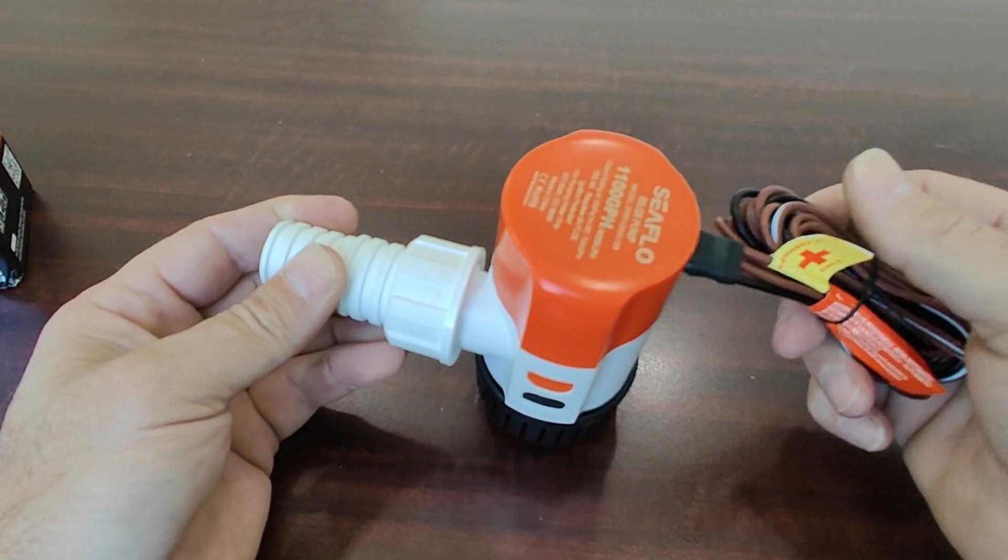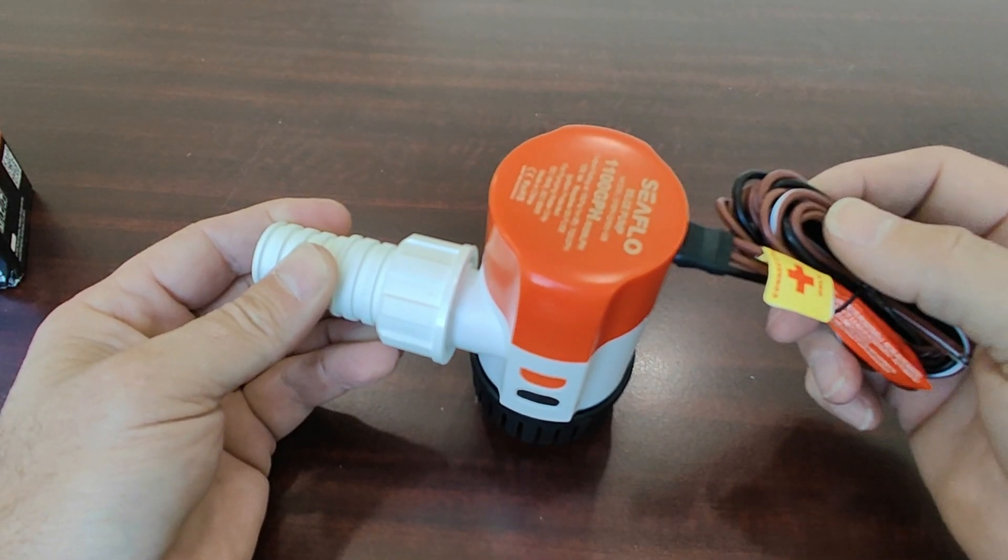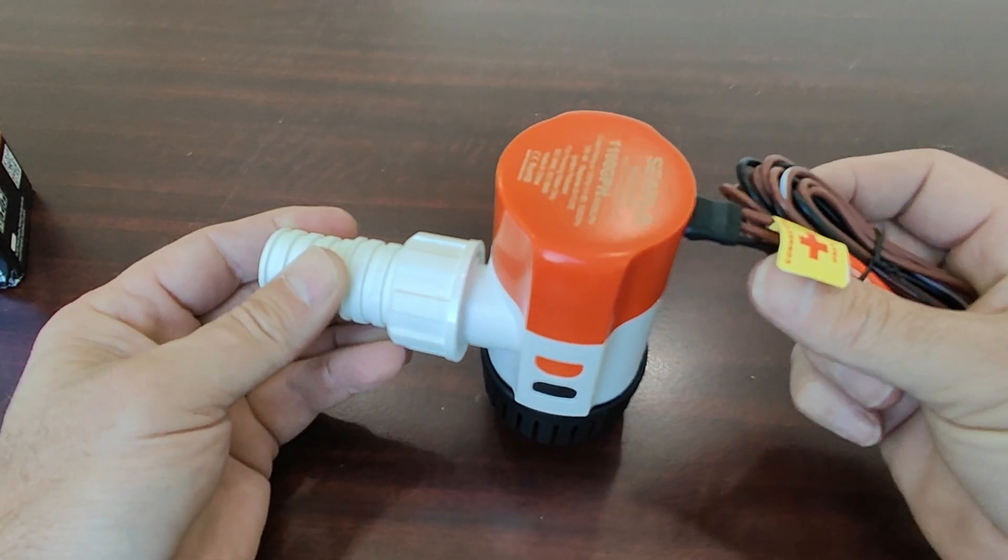The pump has three wires. It has an automatic wire, it has a manual wire, and it has a black ground wire.